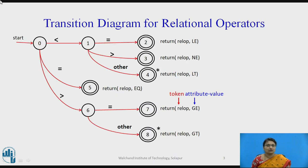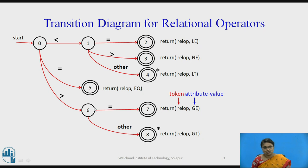Consider this transition diagram where state 0 is the beginning state and the accepting states are 2, 3, 4, 5, 7, and 8. Every accepting state returns two things: the category of the token — that is, the token itself (relop) — and its attribute. For example, the transition moving from state 0 to 6 on greater-than and then equal-to moves to state 7, meaning it is the greater-than-or-equal-to token.